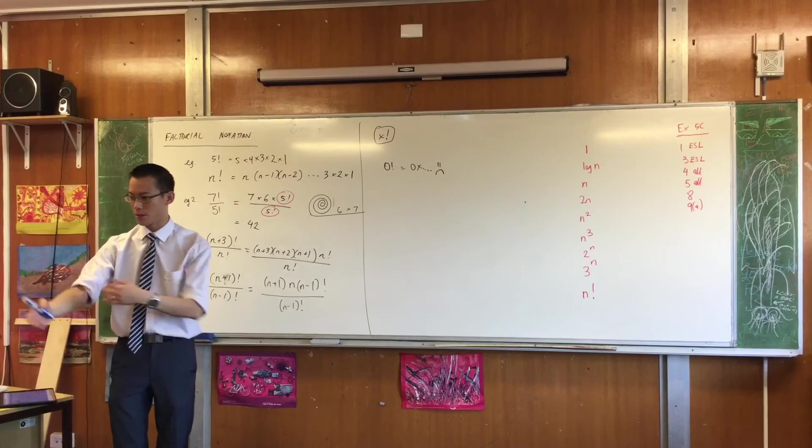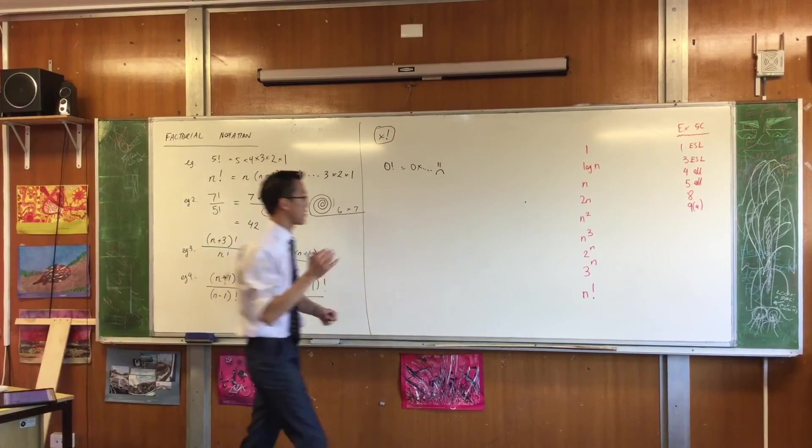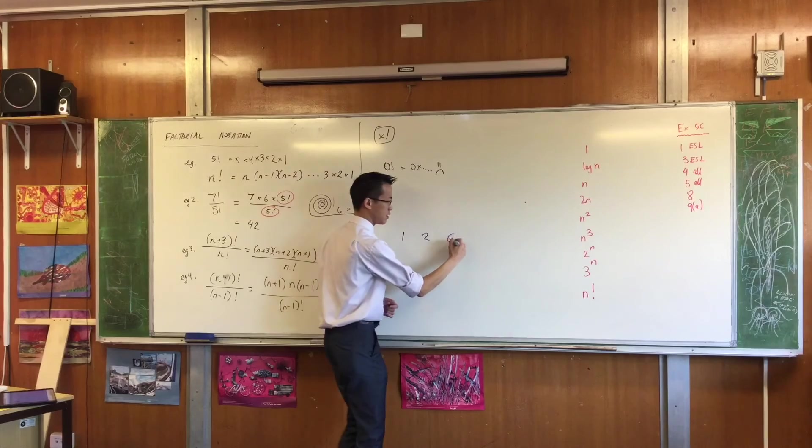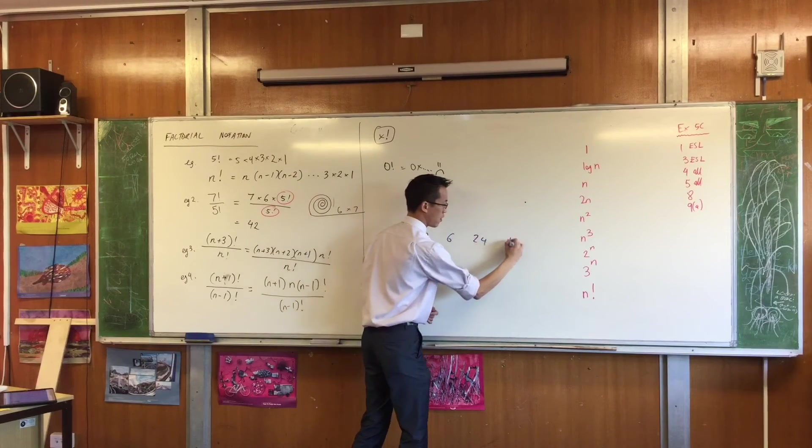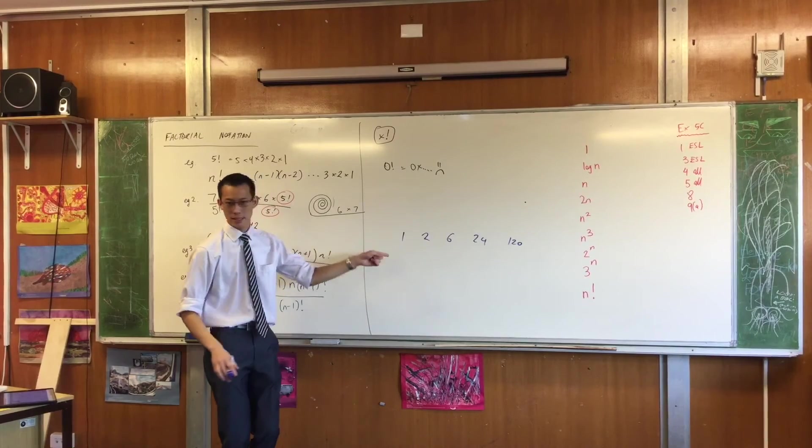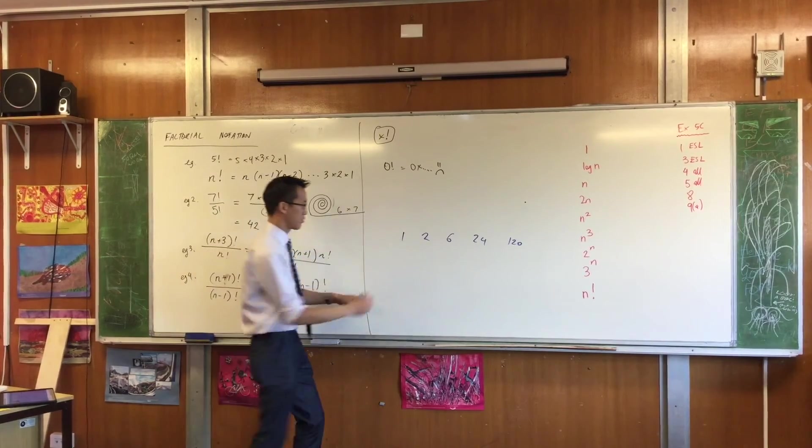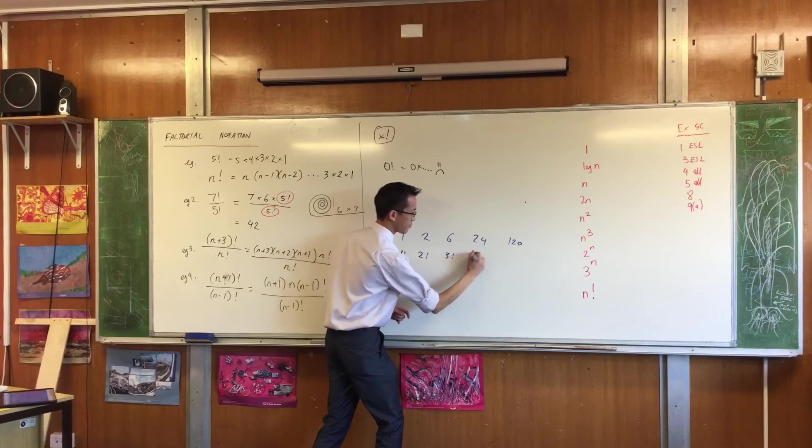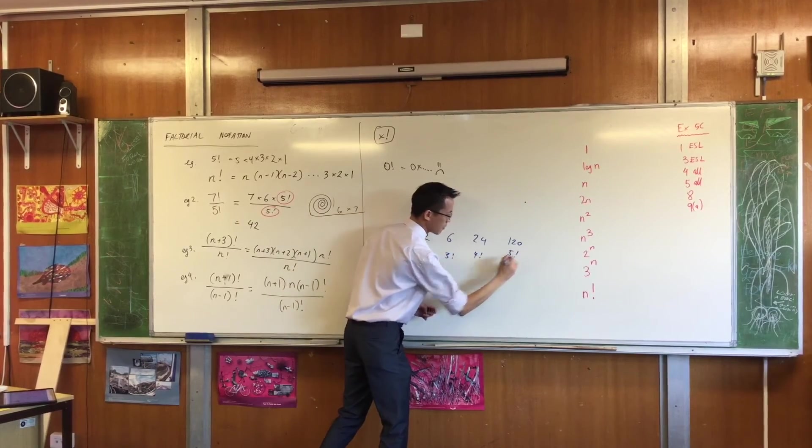If you go back to your numbers that you wrote in your table, I'm just going to write them down again. I think it was, what, 1, 2, 6, 24, 120. Yes? Can you just quickly label for me what these are, which is 1 factorial, 2 factorial, et cetera? 1 factorial, 2 factorial. Okay.